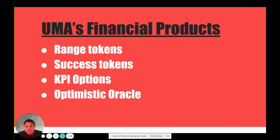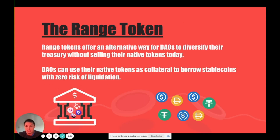UMA's financial contract templates are a combination of a range token, a success token, KPI options, and an optimistic oracle. We'll run through at a very high level what each of these token types do and what you can build on top of them as a follow-on project.